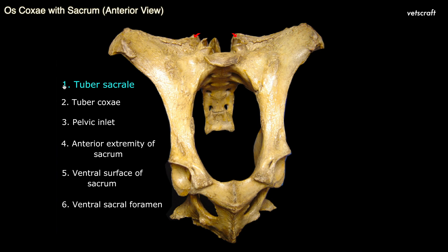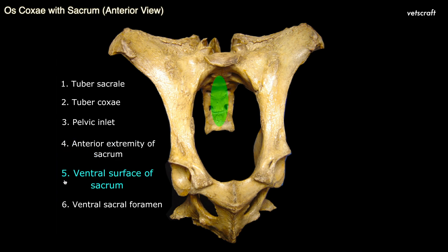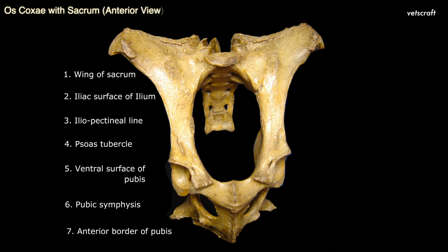This picture shows the anterior view of oscoxae with sacrum. Tuber sacral is the internal angle of ilium. Tuber coxae is the external angle of ilium. The pelvic inlet is the anterior opening of the pelvic cavity. The anterior extremity of sacrum and the ventral surface of the sacrum are involved in forming the roof of the pelvic cavity. The ventral sacral foramina are for the passage of ventral primary branches of sacral spinal nerves. Note the anterior surface of the wings of sacrum — these are non-articular, while the posterior surface articulates with the ilium.